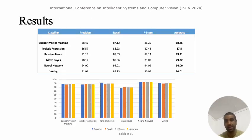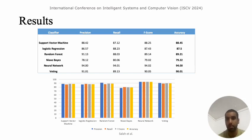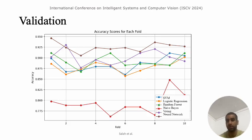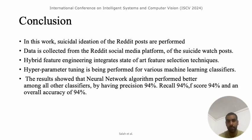These are the results generated from machine and ensemble learning techniques. From the comparative study chart, the neural network gives the highest accuracy among all algorithms, with a precision of 94%, recall of 94.1%, and F1 score of 94.2%, giving an overall accuracy of 94%. The confusion matrix and ROC curves along with the precision-recall curve confirm this performance. To validate our approach, we used 10-fold cross validation, and the average accuracy matches the testing accuracy, confirming that our model is reliable.